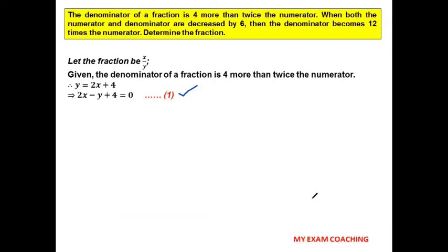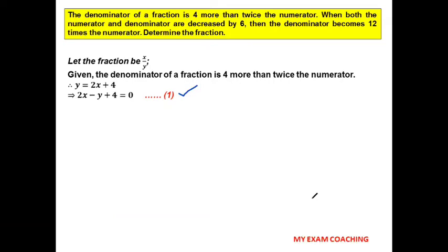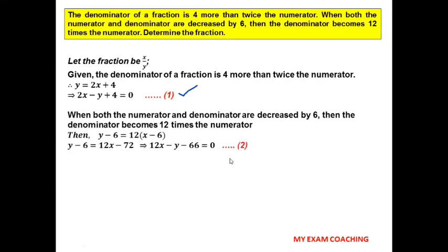The second condition: when both numerator and denominator are decreased by 6, the denominator becomes 12 times the numerator. So the new denominator is y − 6 and the new numerator is x − 6. We write: y − 6 = 12(x − 6). Opening the bracket: y − 6 = 12x − 72. Rearranging gives: 12x − y − 66 = 0. This is equation number 2.